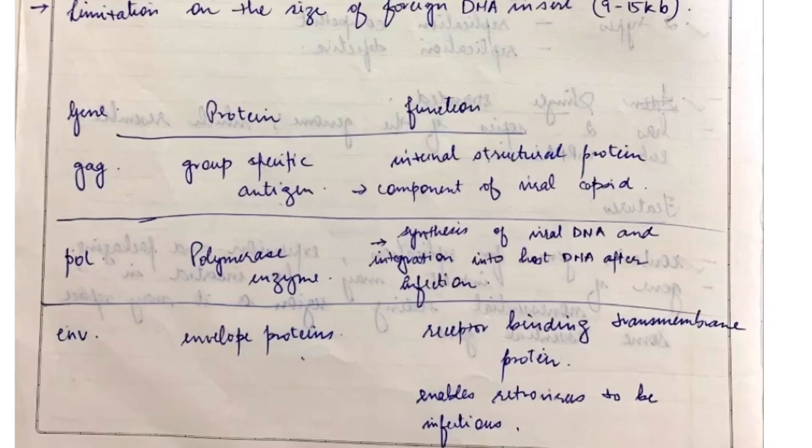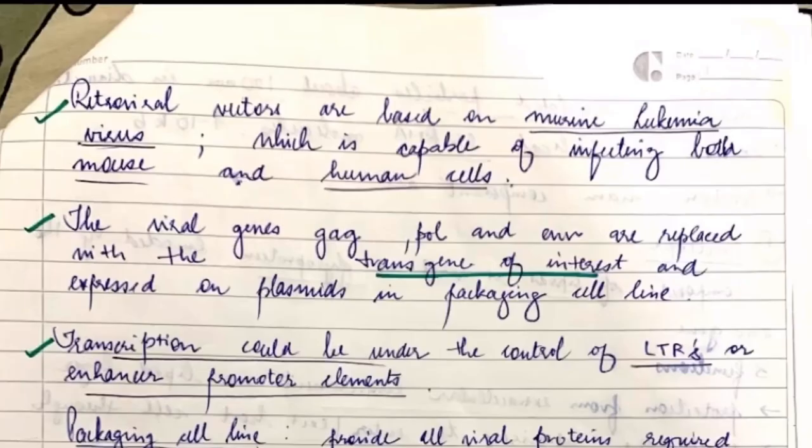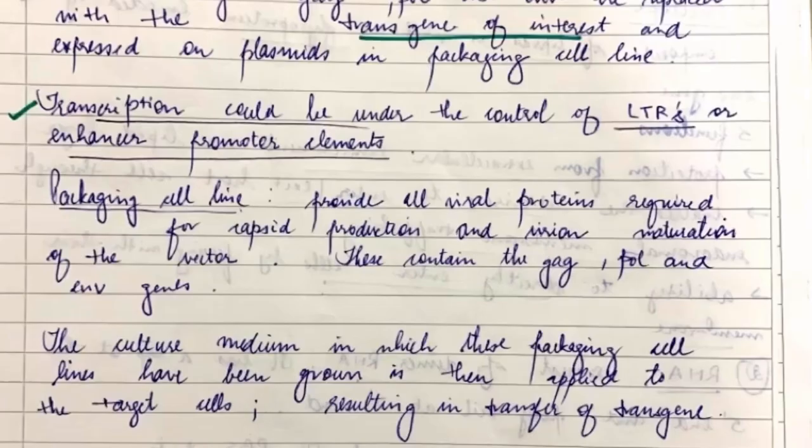In the structure I've used several gene names like env, pol, and gag. I have written their functions as well so that you can elaborate on them. Another important term is packaging cell lines that means it provides all the viral proteins required for the capsid production and virion maturation of the vector. These packaging cell lines have been made so that they contain all the enzymes like env, gag, and pol genes.